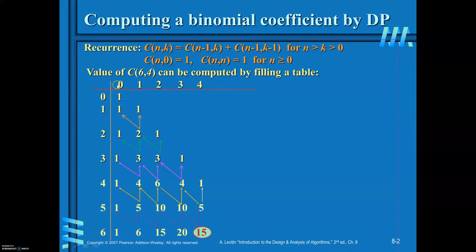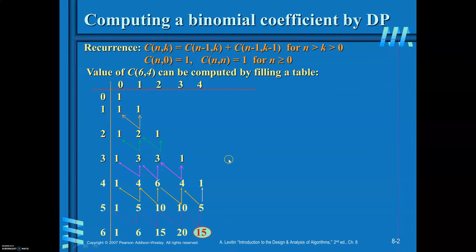When i equals j, then C(i,j) = 1. And if j equals 0, then C(i,j) = 1. Otherwise, C(i,j) = C(i-1, j) + C(i-1, j-1), where C(i-1,j) is the previous row same column and C(i-1,j-1) is the previous row previous column. This is the algorithm.